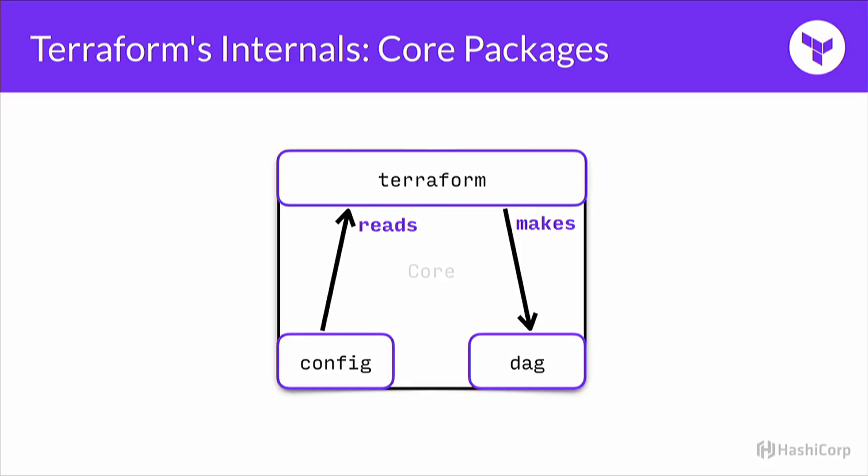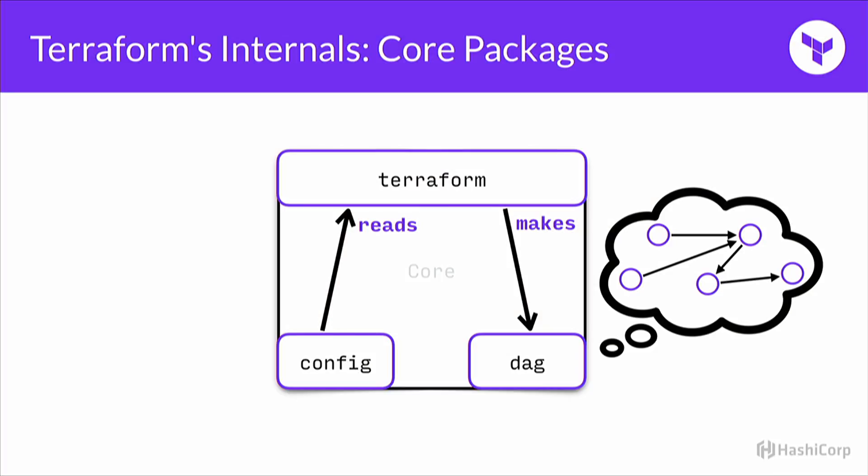Within core, Terraform has a bunch of different packages to divide up responsibilities. At the top we have the core package actually called Terraform. We have a separate package for reading config, responsible for translating the HCL files you write into a memory structure. Config does that, hands it off to Terraform, and then Terraform makes a graph — using a separate package called DAG to make that graph. This provides a very nice isolation: all of the graph theoretical concepts we just walked through are implemented only in the DAG package. Terraform interacts with the DAG package so we can verify in a relatively small amount of code that we're doing the correct thing in a well-tested, abstract environment. Terraform is the package that applies the meaning to that graph.